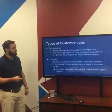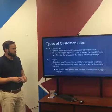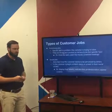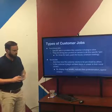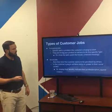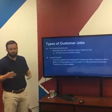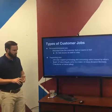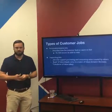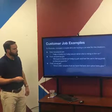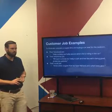When you talk about customer jobs, you can segment them into categories. Functional jobs are specific tasks or problems the customer's trying to solve — mow the lawn, paint the house, schedule meetings. Social jobs are about how the customer wants to be perceived — look wealthy, appear professional, look creative. Personal and emotional jobs are about how a customer wants to feel — secure, relaxed. Supporting jobs help them purchase and consume value, like how Kayak.com aggregates sites to make it easier to choose flights. Your product can address multiple jobs, and sometimes that's important for making it compelling.